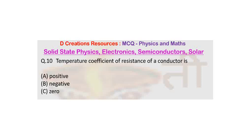And let us look at one question. Temperature coefficient of resistance of a conductor is? And there are three choices. Positive, Negative and Zero.